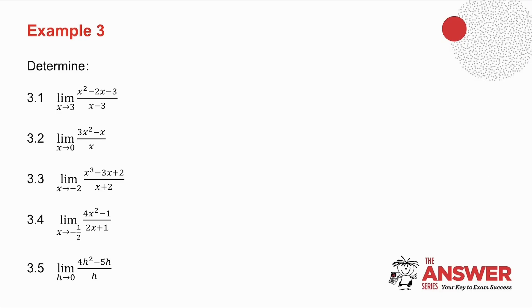I have five examples here. What I want you to do is pause the video. I want you to try them yourself. Factorize them. Cancel what can cancel. And then take the limit. So pause the video. Try them yourself. And then we will do them together.